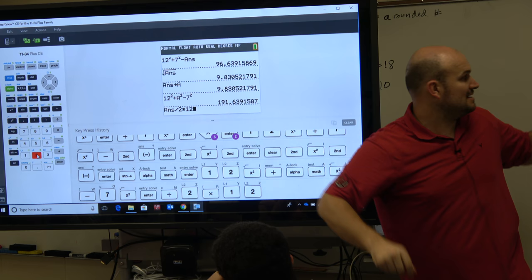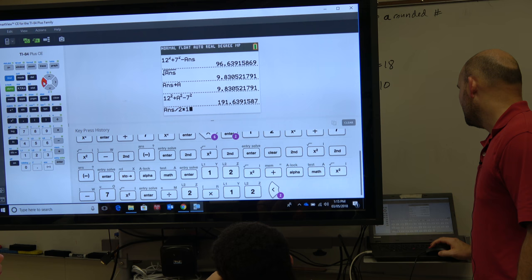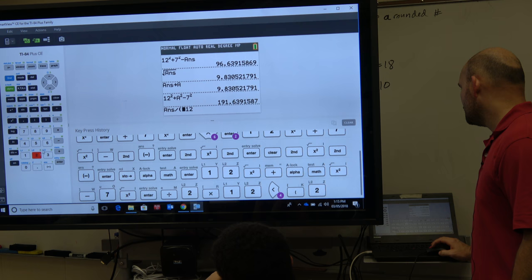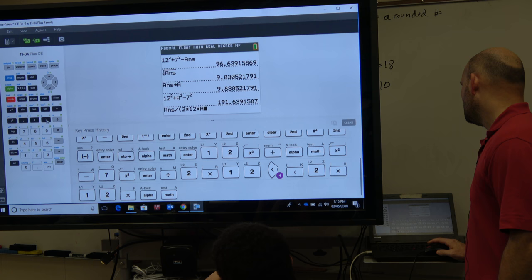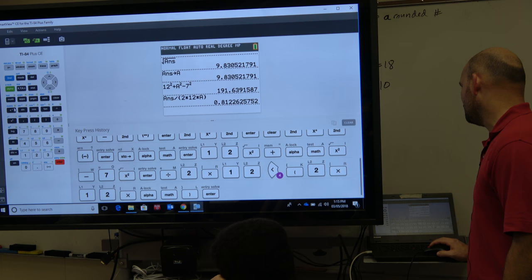We want it to divide by the whole denominator. So what we need to do is make sure we put parentheses in there. So you're dividing by, you're going to put your denominator in parentheses. So it's 2 times 12 times alpha a. Close the parentheses. OK, and now we have that value, and we'll just take the cosine inverse of that decimal. So I hit second cosine.